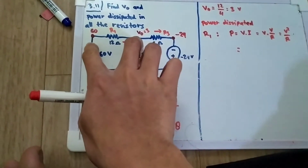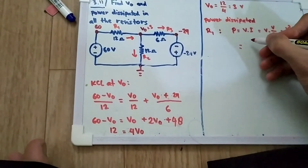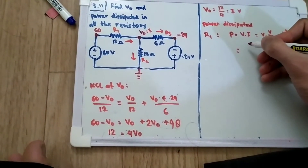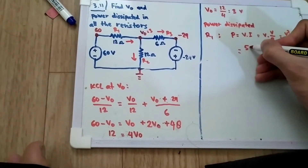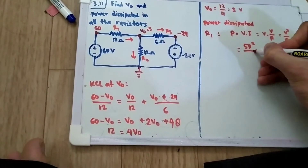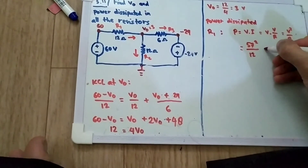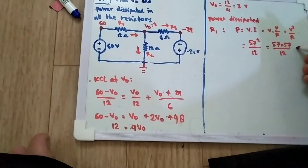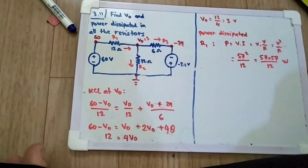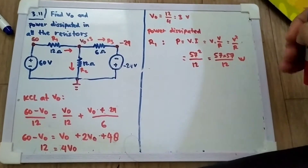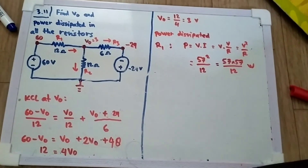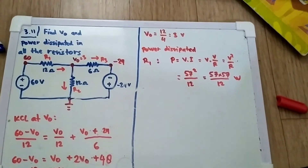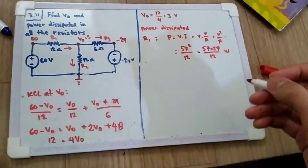For R1, we need the voltage across it. The voltage is 60 minus V0, which is 60 minus 3, giving 57V. So P_R1 equals 57 squared divided by 12. That is 57 times 57 divided by 12. Using a calculator, we get the power dissipated by R1.